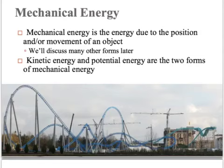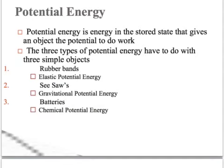A roller coaster has several examples of this. As you are moving on a roller coaster, you have kinetic energy. As you go up to the peaks, you have more potential energy — if you fell off, gravity would do a lot of work on you. As you go down, you get faster, so kinetic energy goes up and potential energy goes down because you're getting closer to the ground. Potential energy is energy in the stored state that gives an object the potential to do work — the key words are stored and potential.